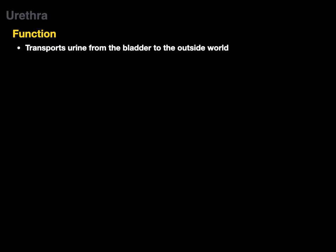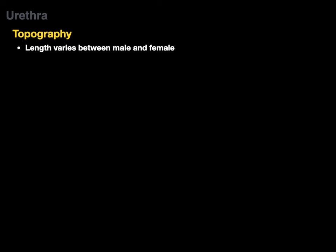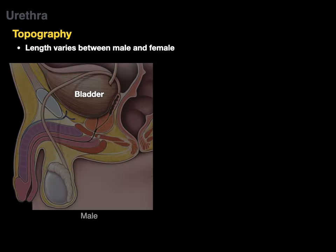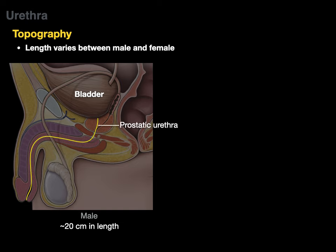The urethra transports urine from the bladder to the outside world. In males it also serves as a passageway for ejaculation. The male urethra is about 20 centimeters long and has three parts: the prostatic urethra, surrounded by the prostate and receiving the two ejaculatory ducts; the membranous urethra, surrounded by the external urethral sphincter; and the spongy urethra, within the corpus spongiosum erectile tissue of the penis.